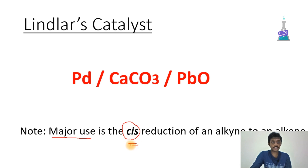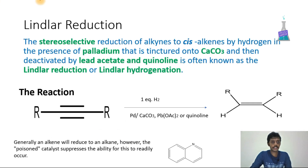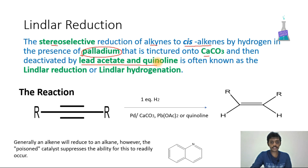Lindlar reduction is the stereoselective reduction of alkynes to cis alkenes by hydrogen in the presence of palladium deposited on calcium carbonate, deactivated by lead acetate and quinoline. It is often known as Lindlar reduction or Lindlar hydrogenation.